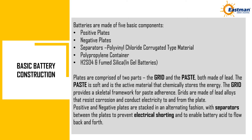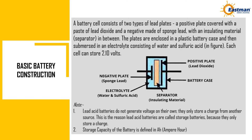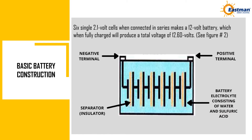Positive and negative plates are stacked in an alternating fashion, with separators between the plates to prevent electrical shorting and to enable battery acid to flow back and forth. A battery cell consists of a positive plate covered with a paste of lead dioxide and a negative plate made of sponge lead, with an insulating separator in between. The plates are enclosed in a plastic battery case and submersed in an electrolyte of water and sulfuric acid. Each cell can store 2.10 volts. Lead acid batteries do not generate voltage on their own — they only store a charge from another source, which is why they are called storage batteries. Six single 2.1 volt cells connected in series make a 12 volt battery, which when fully charged produces a total voltage of 12.60 volts.